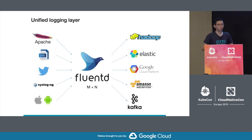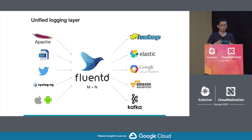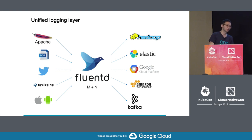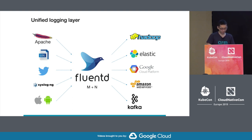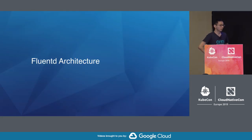Fluentd has a plugin architecture, so we can build a unified logging layer with Fluentd. Fluentd becomes a glue in your data pipeline — we can collect data from any sources and send data to any destination with plugins. You don't need to write any code for your destinations. That's the overview of Fluentd: a pluggable model for how to collect and distribute data into plugins.